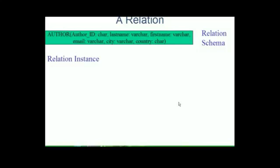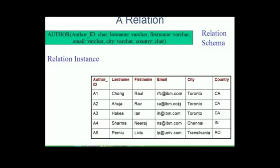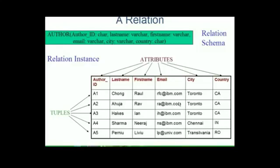A relation instance, on the other hand, is a table made up of rows and columns. The columns are termed as attributes or fields, and the rows tuples.